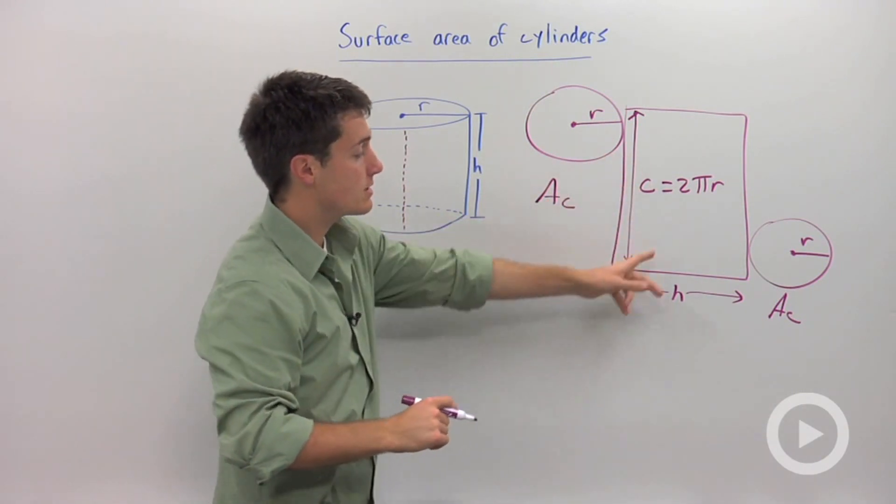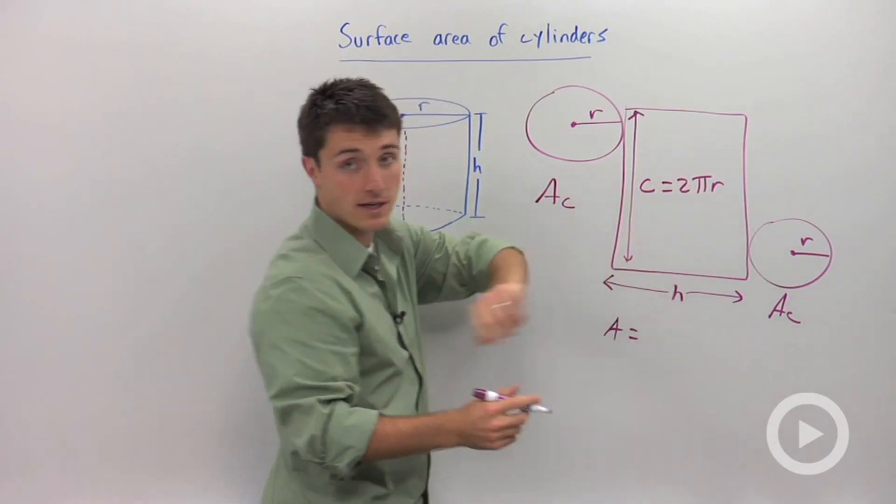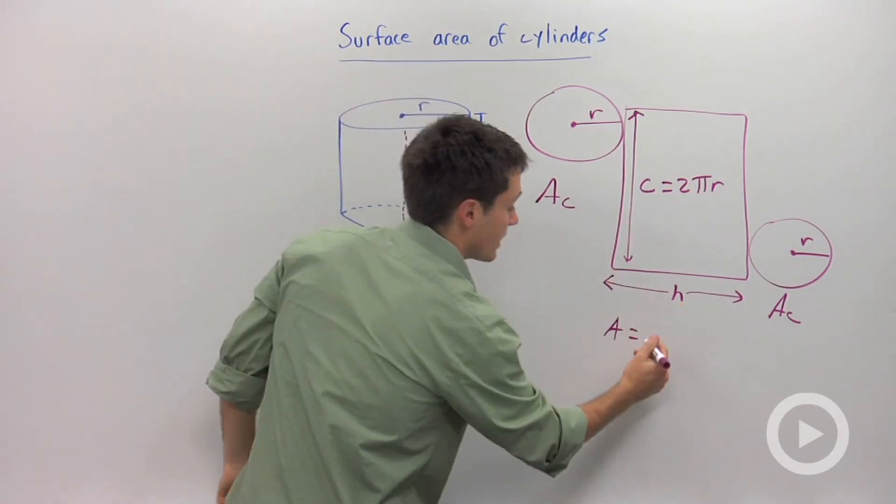So to find the area of this base you're going to need to multiply 2 times π times r times h.